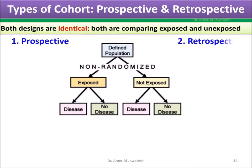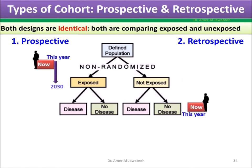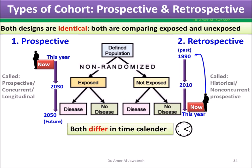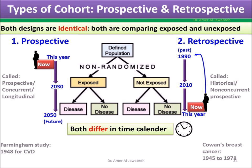Types of cohort study: prospective and retrospective — both designs are identical in comparing exposed and unexposed. Prospective is future-oriented, also called concurrent or longitudinal. Retrospective is future-in-the-past, called historical or non-concurrent. Both differ in time calendar. A famous prospective study is the Framingham study. A famous retrospective cohort study is the Cowan's breast cancer study.